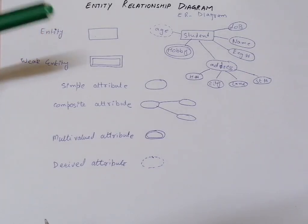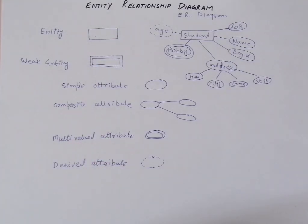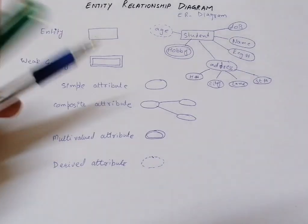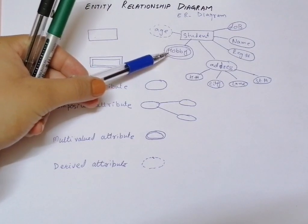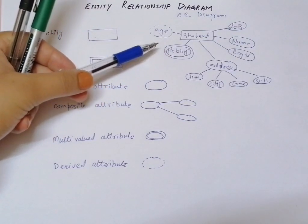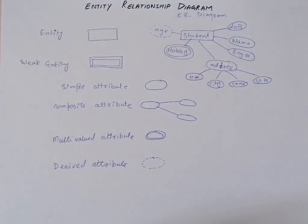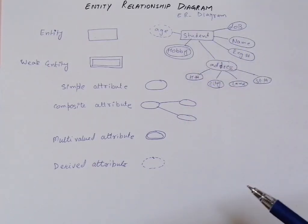Up to this point, we have seen how to represent an entity, a weak entity, and attributes of different types and different natures. We have completed all the things related to one particular entity. But we cannot end it here, because these entities are somehow connected with each other — every entity has attributes, but this entity is also connected with some other entity.